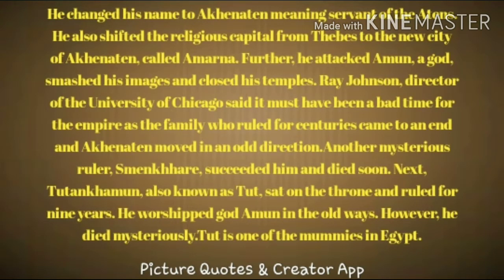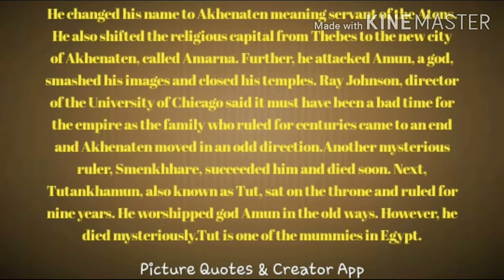Further, he attacked Amarna's god, smashed its images, and closed its temples. Ray Johnson, director of the University of Chicago, said it must have been a bad time for the empire, as the family who ruled for centuries came to an end, and Akhenaten moved in an odd direction. Another mysterious ruler, Smenkhkare, succeeded him and died soon after. Next, Tutankhamun — also known as Tut — sat on the throne and ruled for nine years.